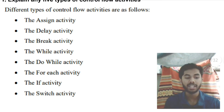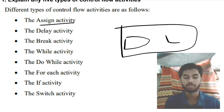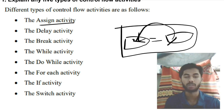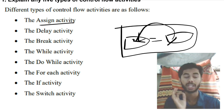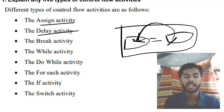Assign activity — you have to make a box, and inside it a small box with a variable on one side and some value on the other. That value will be assigned to that variable. That is known as assign activity. To assign some value to a variable, we will be using assign activity.